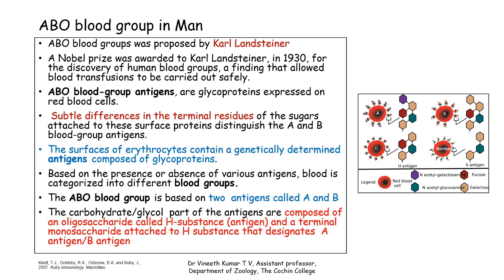The ABO blood group system is mainly based on the presence of antigens, which are glycoproteins expressed on the RBCs. There are certain subtle differences in the terminal residues of the sugar attached to the surface proteins, which distinguishes the A and B blood group antigens. The surfaces of erythrocytes contain genetically determined antigens composed of glycoproteins. Based on the presence or absence of various antigens, blood is categorized into different blood groups. The ABO blood group is based on two antigens: the A antigen and the B antigen.